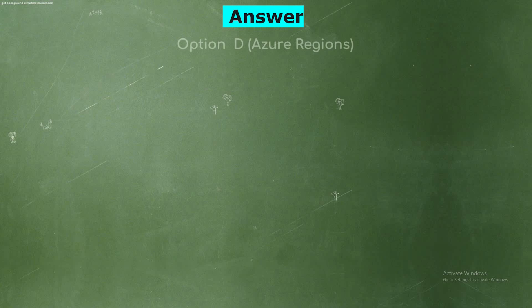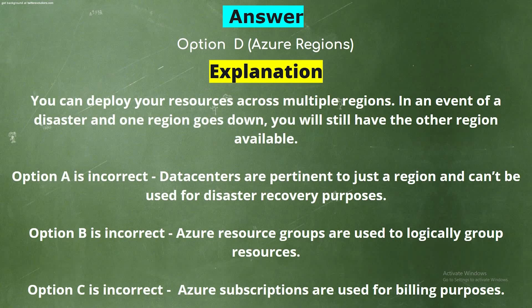The correct answer is Option D - Azure Regions. Explanation: You can deploy your resources across multiple regions. In an event of a disaster and one region goes down, you will still have the other region available. Option A is incorrect: data centers are pertinent to just a region. Option B is incorrect: Azure resource groups are used to logically group resources. Option C is incorrect: Azure subscriptions are used for billing purposes.